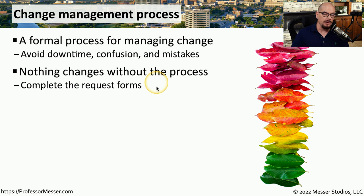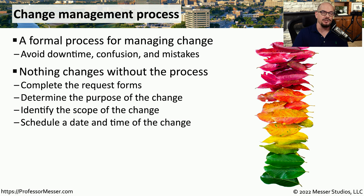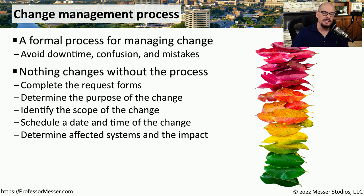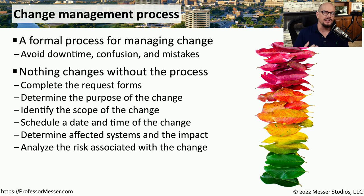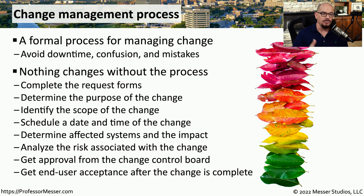The change control process usually starts with someone needing to make a change and filling out a form detailing what that change is going to be. This involves defining the scope of the change and the date and time it is scheduled to occur. There's usually documentation showing all systems that will be affected and what risk there is. Approval is then obtained from the change control board, and once the update is complete, end user acceptance confirms the update is working as expected.